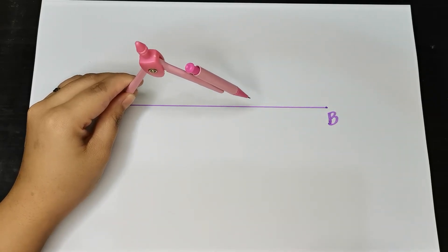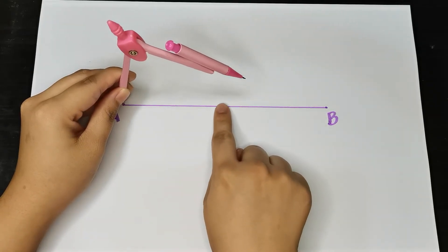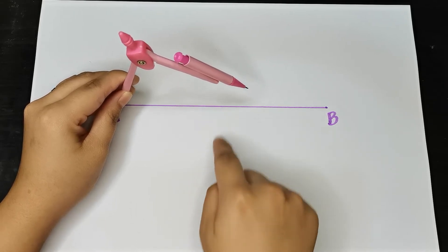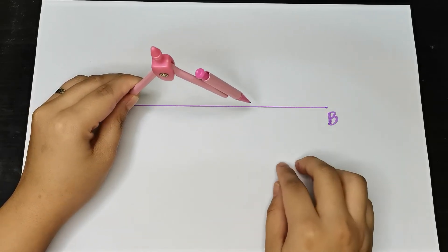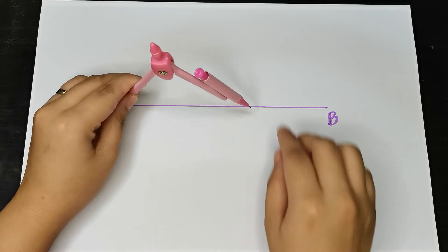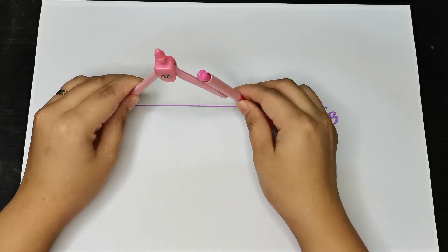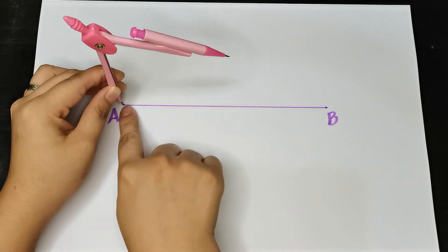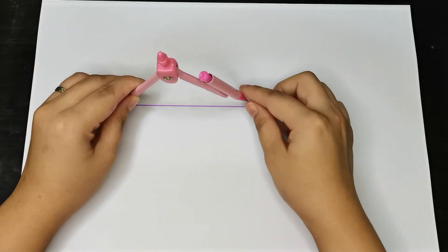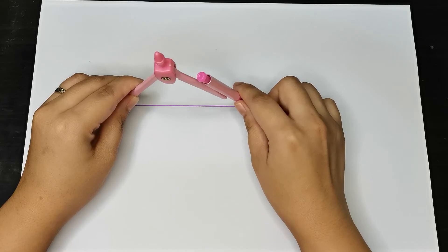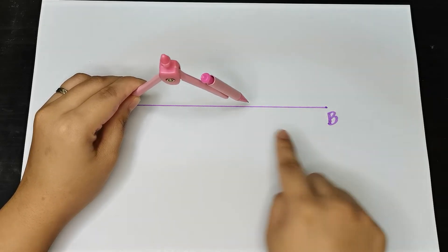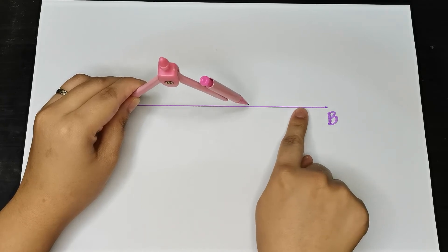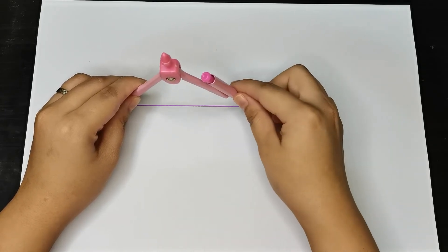Then stretch the compass more than halfway. Estimate where the middle is. You can't just draw randomly; we have to follow the steps. Place the sharp point on point A, then stretch more than halfway to point B, just past the middle.